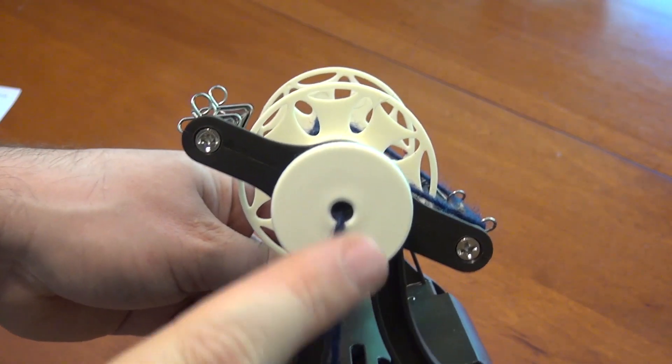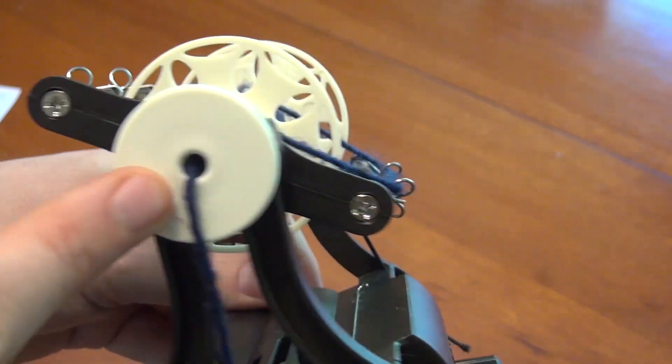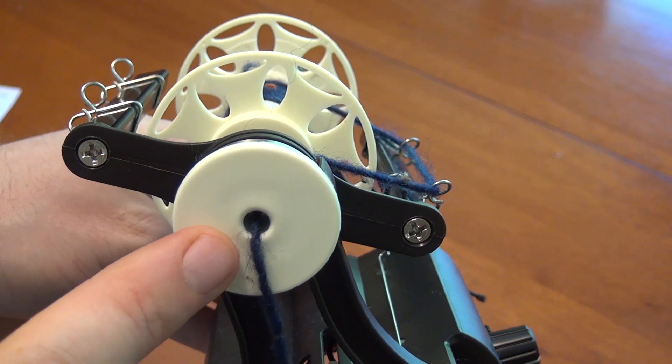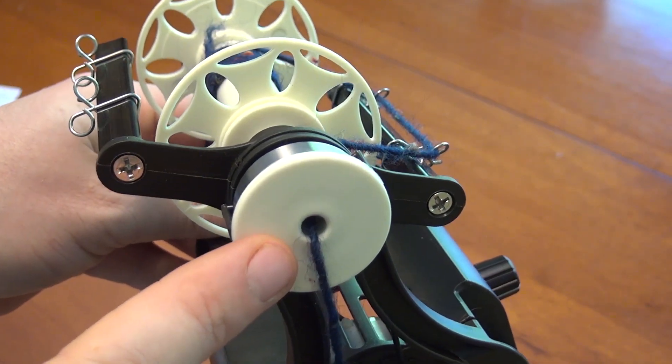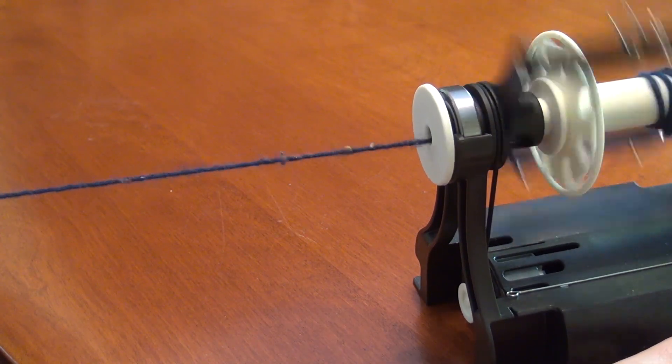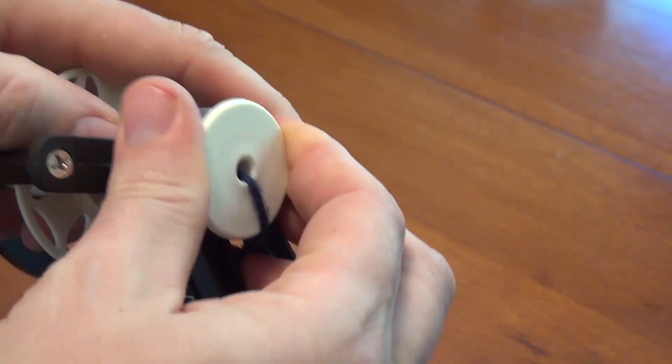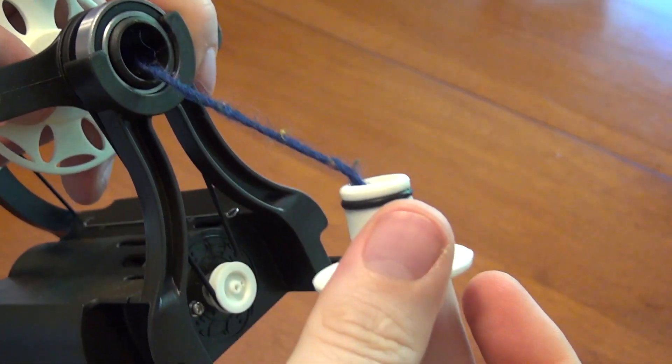On the front of the flyer is this piece which is called the orifice reducer. The purpose of this is to reduce the size of the orifice hole on the front of the Nano. While using this piece is optional, some people like using it when spinning because it reduces the wobble of the yarn. That said, if you don't want to use the orifice reducer you can easily remove it.